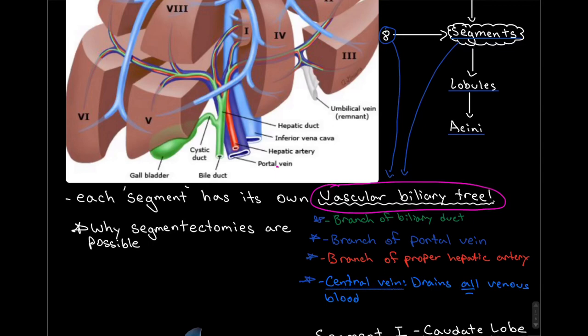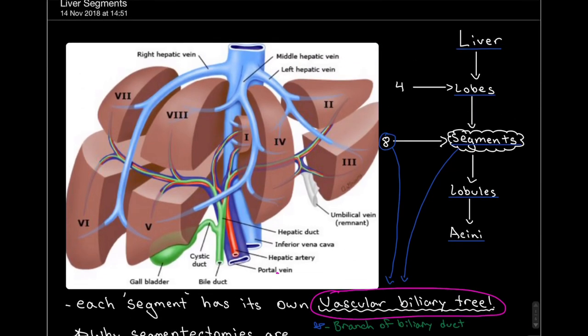And of course you have the central vein which drains all of the blood into one of three hepatic veins, right, middle or left hepatic veins and these all drain their blood into the inferior vena cava.